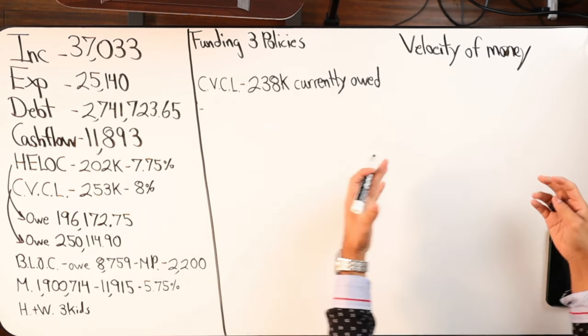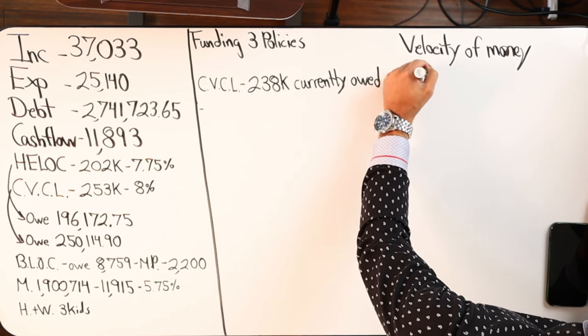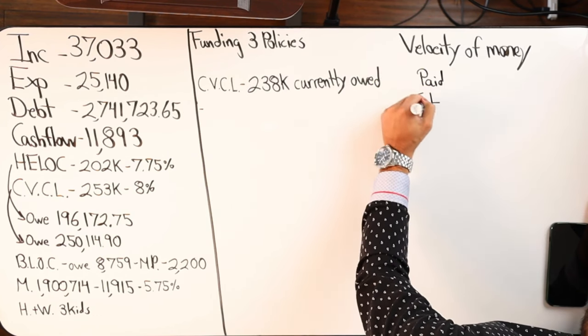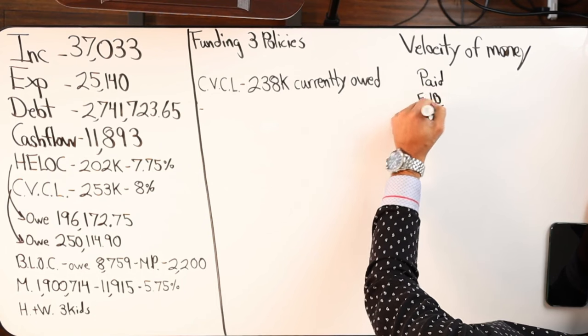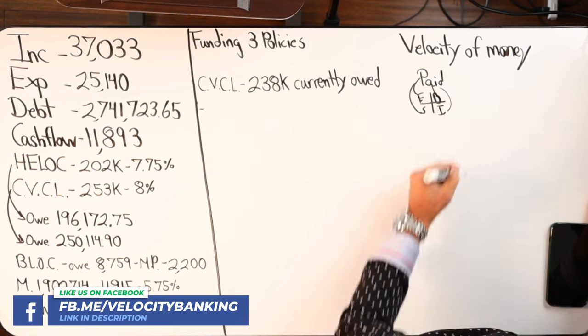Most people that I meet, their money flows like this. They get paid. You're either in one of these four quadrants or maybe you're in all of them, but you're either an employee, self-employed, a business owner, or an investor.